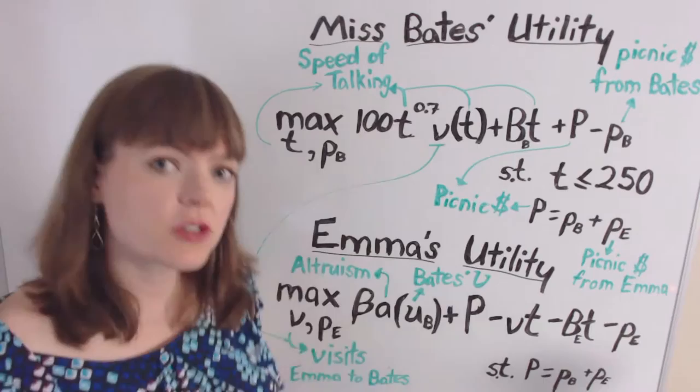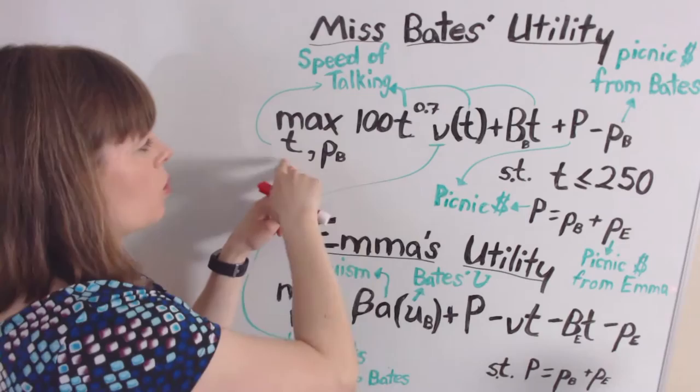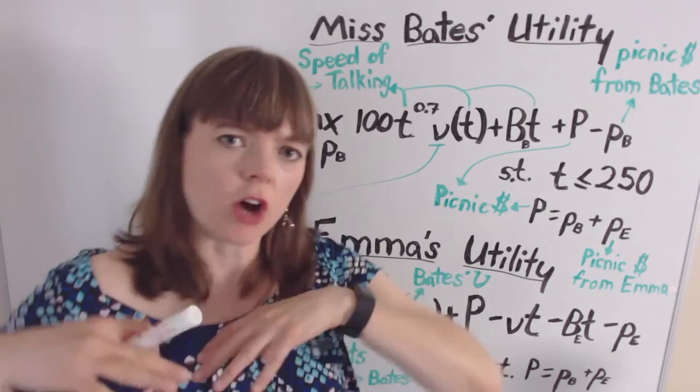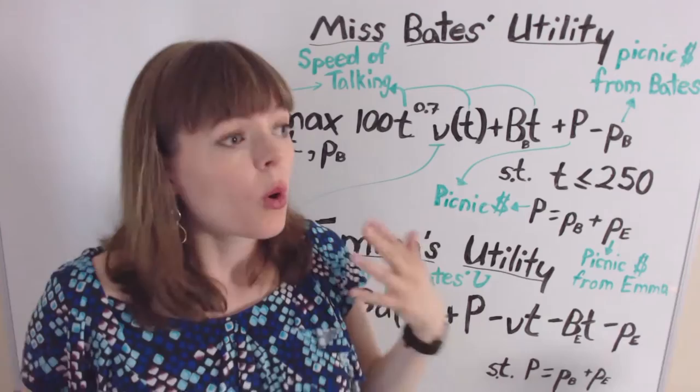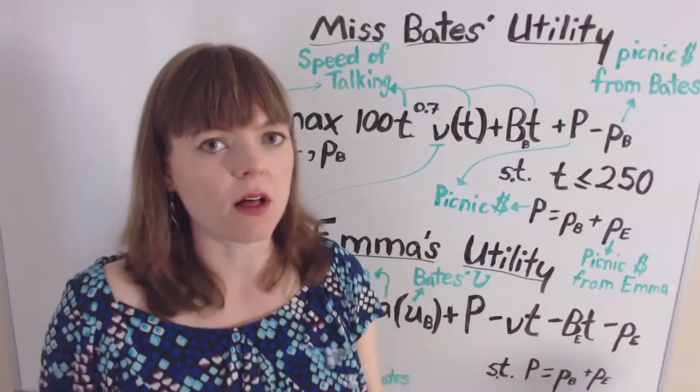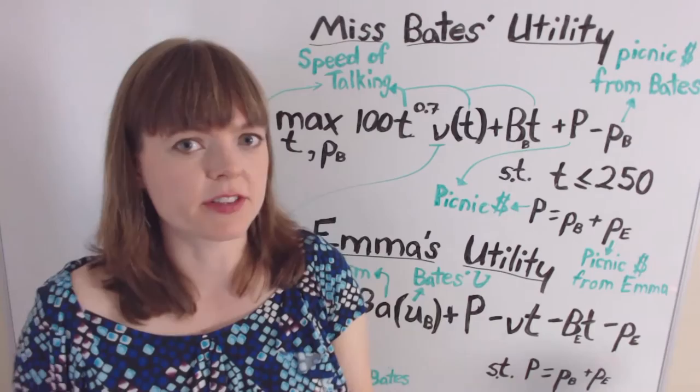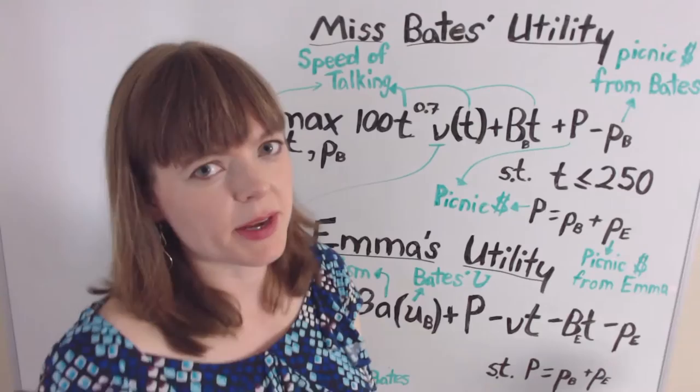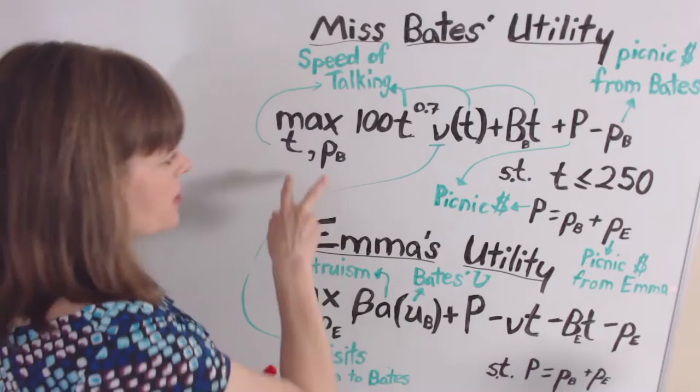Miss Bates has two choice variables. One is the speed of her talking — she can talk really fast so it's impossible for other people to get a word in edgewise, or she can talk more slowly so that others can interrupt and participate in conversation. Her other choice variable is her financial contribution to the picnic at Box Hill in the book Emma. Those are her two choice variables — the two things she has to decide.